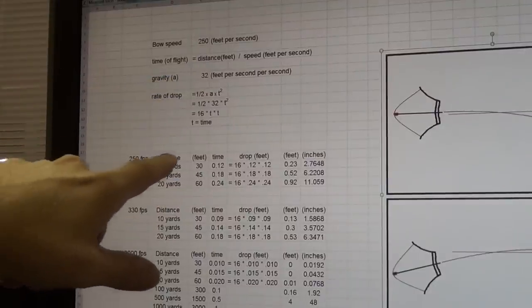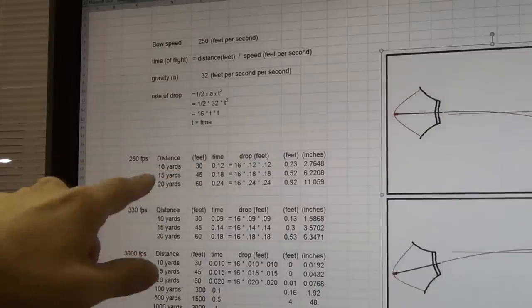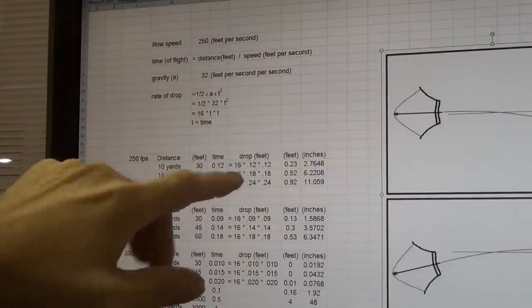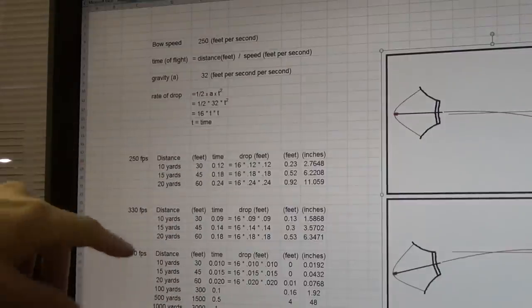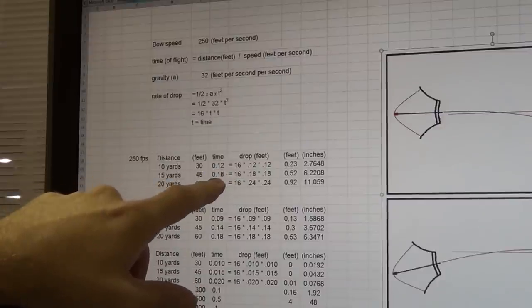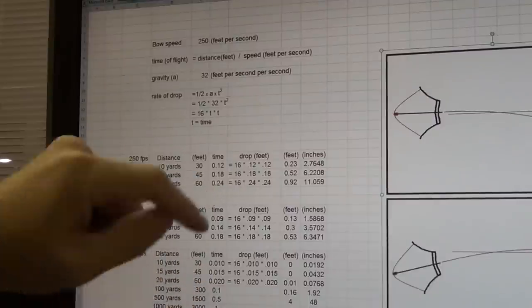Okay, 250 feet per second, we've got three different distances. We have three different distances in yards and in feet. If you do this math, it works out at, if you assume no slowing down for air resistance or anything like that. The arrow takes 0.12 seconds to go 10 yards, 0.18 to go 15, and 0.24 seconds, a quarter second, to go 20 yards.